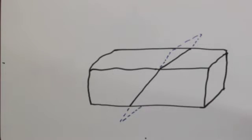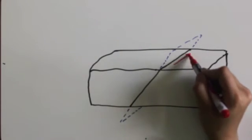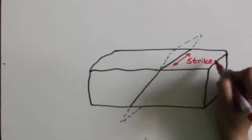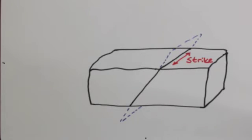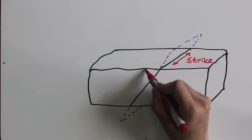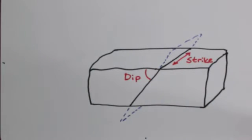Geologists use strike and dip to describe the orientation of a plane in space, be it a fault plane or a bedding plane in the rocks. Strike is the orientation of a plane relative to north, while dip involves the tilt of the plane relative to horizontal, given as an angle between 0 and 90, 0 being perfectly horizontal and 90 being vertical.